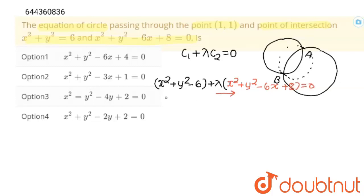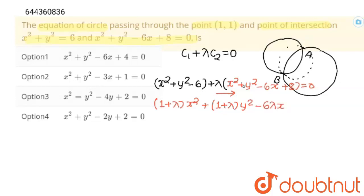I am going to multiply lambda inside the bracket. This will become x² + lambda·x², so taking x² common this gives (1 + lambda)x². Similarly, taking y² common gives (1 + lambda)y². Then lambda multiplies −6x to give −6·lambda·x. And we have −6 + 8·lambda, so this becomes 8·lambda − 6 = 0.